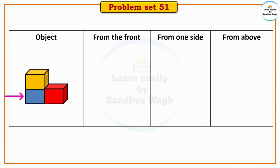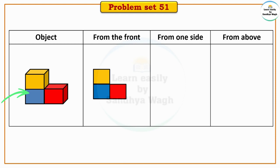The first one is a blue block. The blue block is yellow and the side has red blocks. When we look at the red block and blue block from one side, we see the yellow and red blocks.